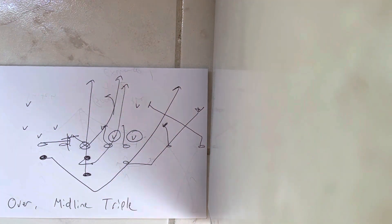When you run midline triple, the benefit is if they give you an even front, the likelihood is they're going to align the B-gap defender to the over side because that's the formation side. Which is good, because you want to run mid—it's easier to run triple to a B-gap defender.